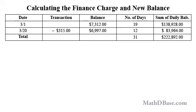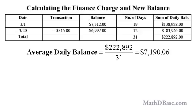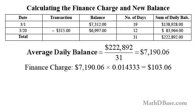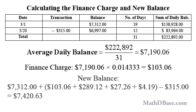Since there are only two entries, the number of days for the static balances will also have to change to reflect that. The average daily balance is $222,892 divided by 31, or $7,190.06, rounded to the nearest penny. The monthly periodic rate is the same as before, so the finance charge is $7,190.06 times 0.014333, or $103.06, rounded to the nearest penny. The new balance is calculated exactly as before — the only difference is the lower finance charge: $7,312 plus $103.06 plus $289.12 plus $27.26 plus $4.19 minus $315, for a new balance of $7,420.63.